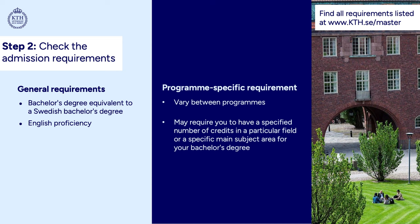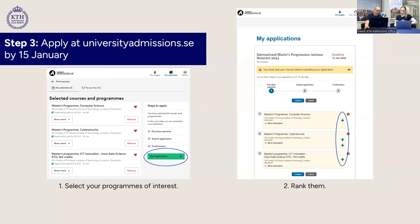You'll want to check all the different program-specific requirements if you're choosing more than one. Most applicants apply to more than one KTH program. All of the information on admission requirements can be found on the KTH website at kth.se/master. Sweden is a bit different from most other countries in that we have a centralized admissions portal for all Swedish universities — universityadmissions.se — where you do all of your applications.